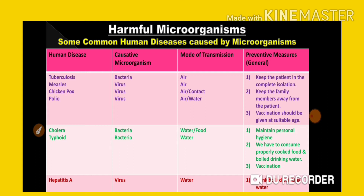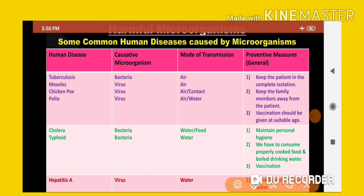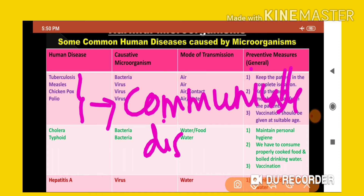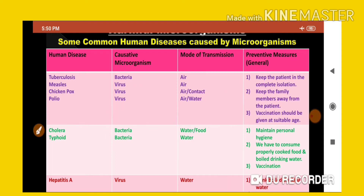The first group covers tuberculosis, measles, chickenpox, and polio. Can you guess? These four diseases all belong to the communicable diseases. Communicable diseases are diseases that can be transferred from one person's body to another person's body.